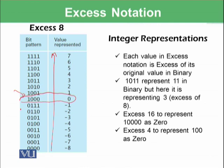here we have stopped and this value is being represented with 0 and all of the following values are representing positive numbers and all of the preceding values are representing the negative numbers. If we are using excess 8 notation, this is called excess 8 notation because it is representing the binary 8 to represent 0.